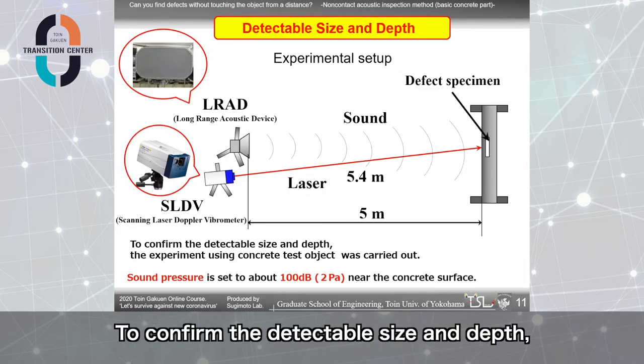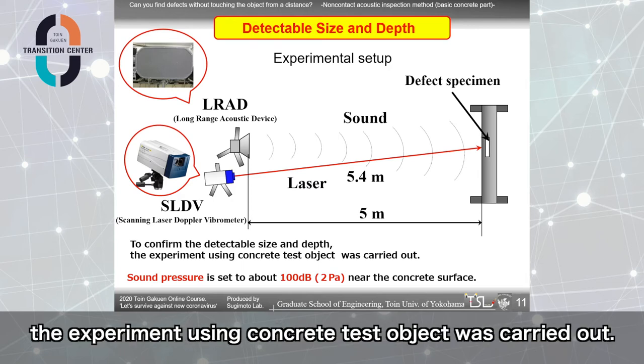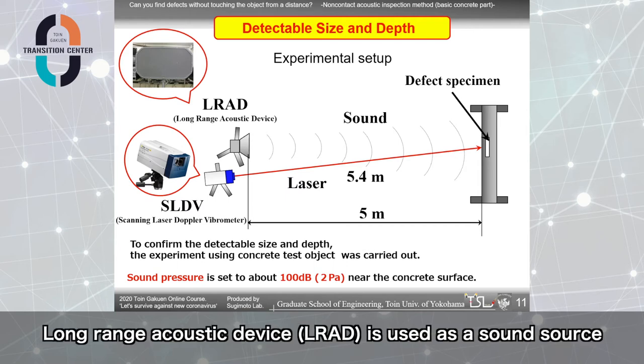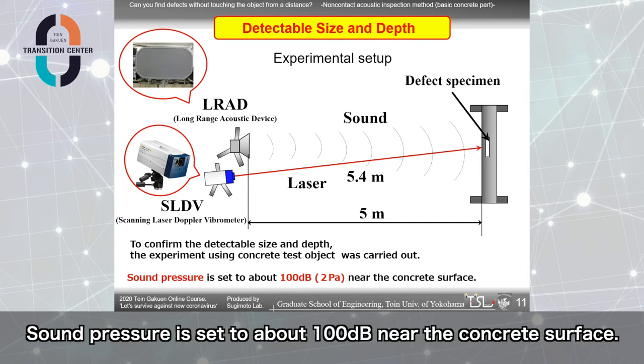To confirm the detectable size and depth, the experiment using concrete test object was carried out. The experimental setup is like this. Long range acoustic device, LRAD, is used as a sound source. Sound pressure is set to about 100 dB near the concrete surface.